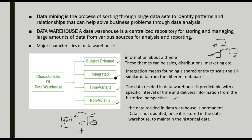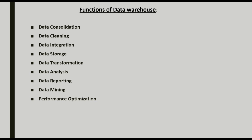So these are the major characteristics of a data warehouse: subject-oriented, integrated, time-variant, and non-volatile. Hope it is clear. Next, the important topic is the functions of a data warehouse. A data warehouse handles huge data sets, so what are those functions?